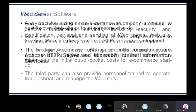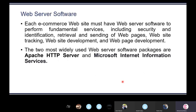The next layer is the web server software. Each e-commerce website must have web server software to perform fundamental services: security, identification, retrieval and sending of web pages, website tracking, website development, and hosting. Today the most popularly used web server software is Apache HTTP server and IIS — Internet Information Services — from Microsoft. Even on your local machine, if you are going to run an ASP.NET website, it will mostly be running on IIS. For Apache HTTP server, if you have already installed XAMPP, you will have the XAMPP control panel available.